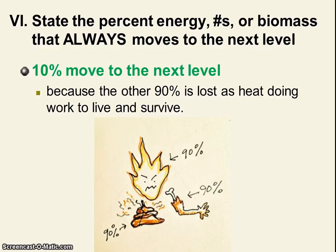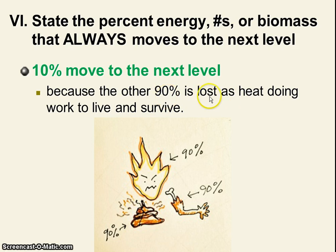Let's summarize our thinking. In Roman numeral number six: state the percent of energy, numbers, and biomass that is always moving on to the next level. There was a consistent pattern — we want this highlighted nice and big. 10% moves on to the next level. Why was it only 10%? Because 90% of the numbers, energy, and biomass was lost due to work or heat just for those organisms to live and survive. Which thing was always the largest in the pyramid? It was always the producers. That's the pattern.